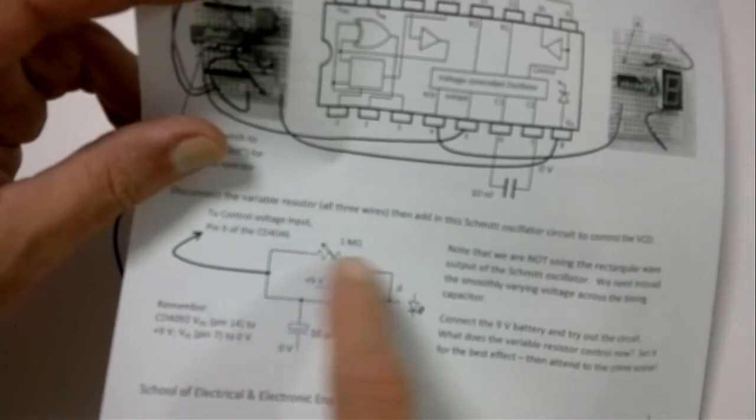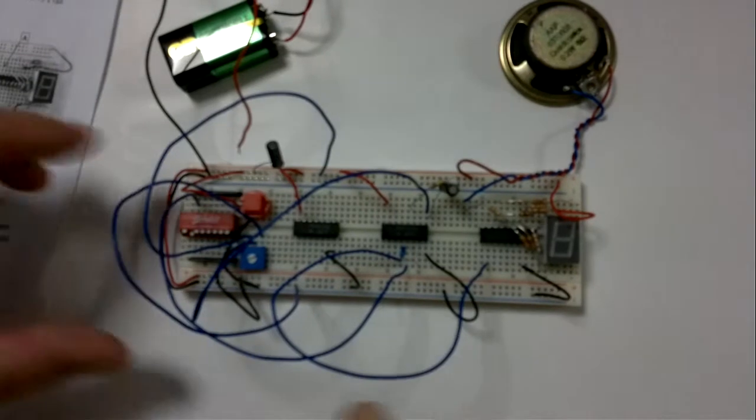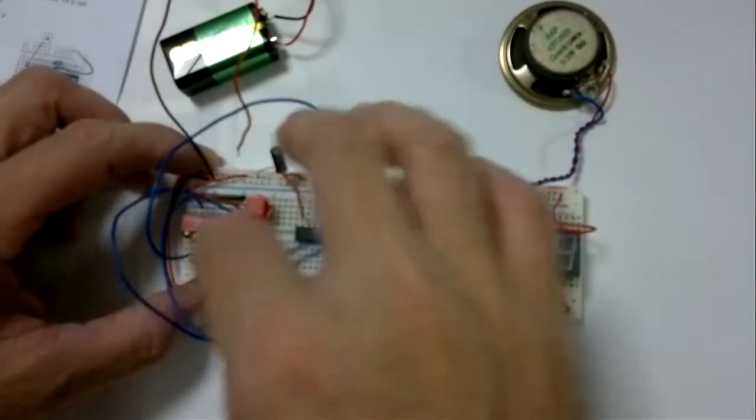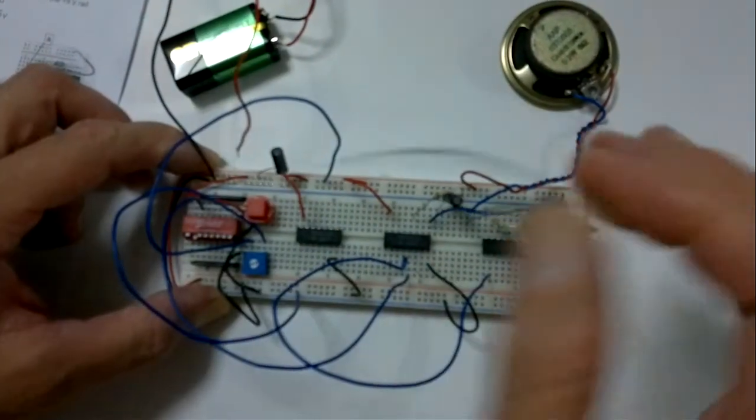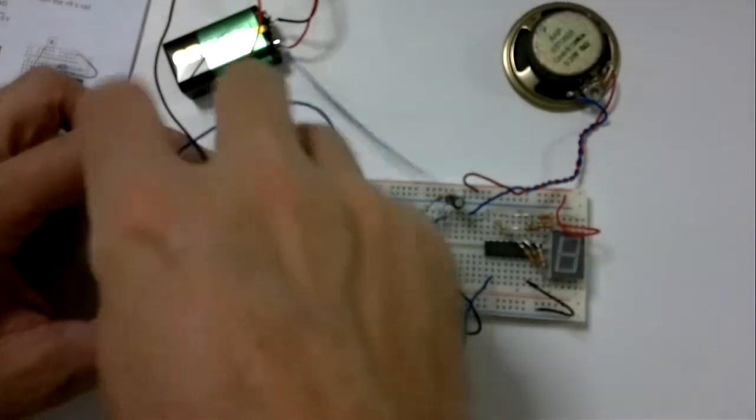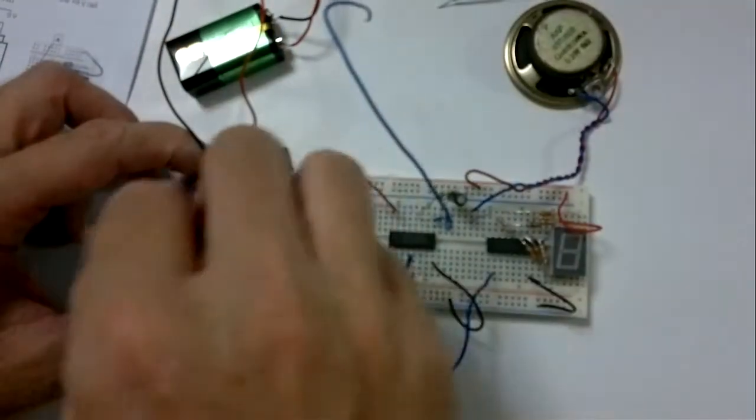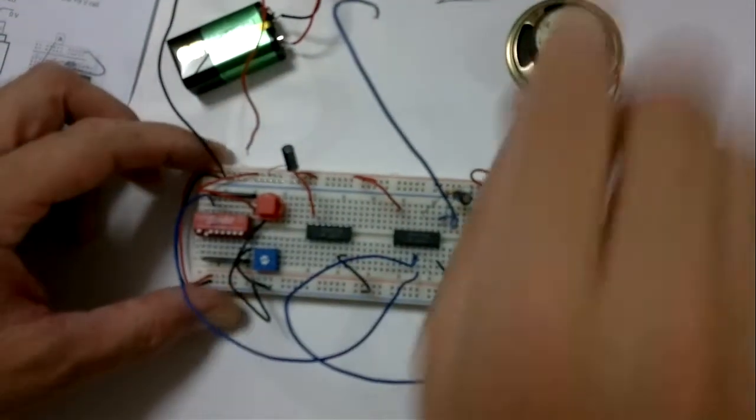Which we're going to use for this instead of the DC voltage that we had before. So what we're going to do is disconnect the resistor from where it was, take out the wires. It's often just best to take out the wires and start fresh.